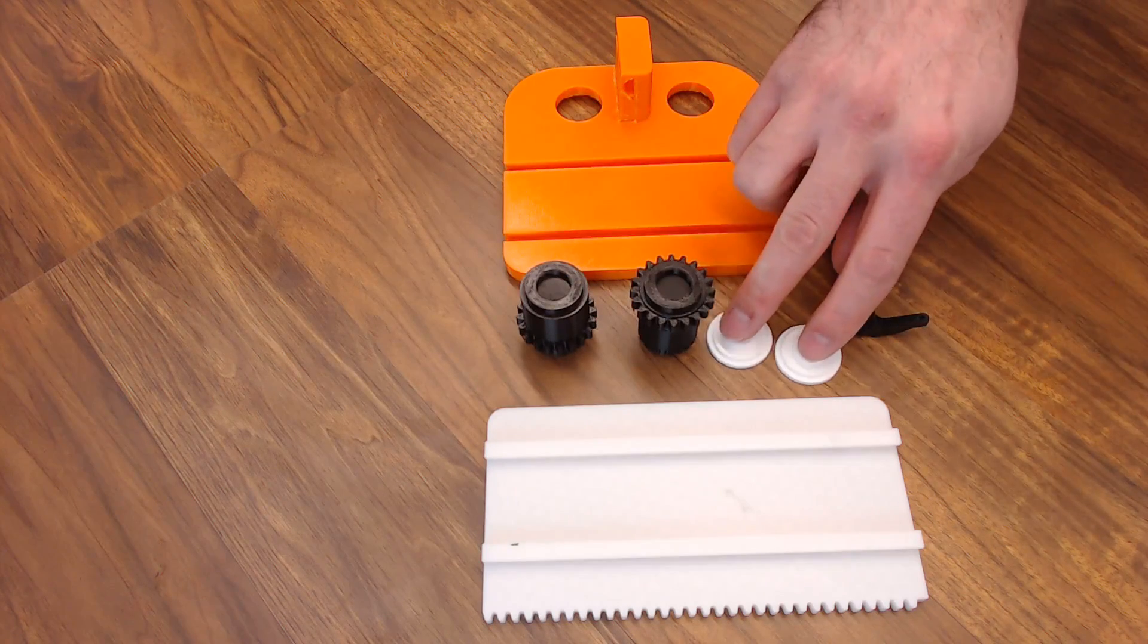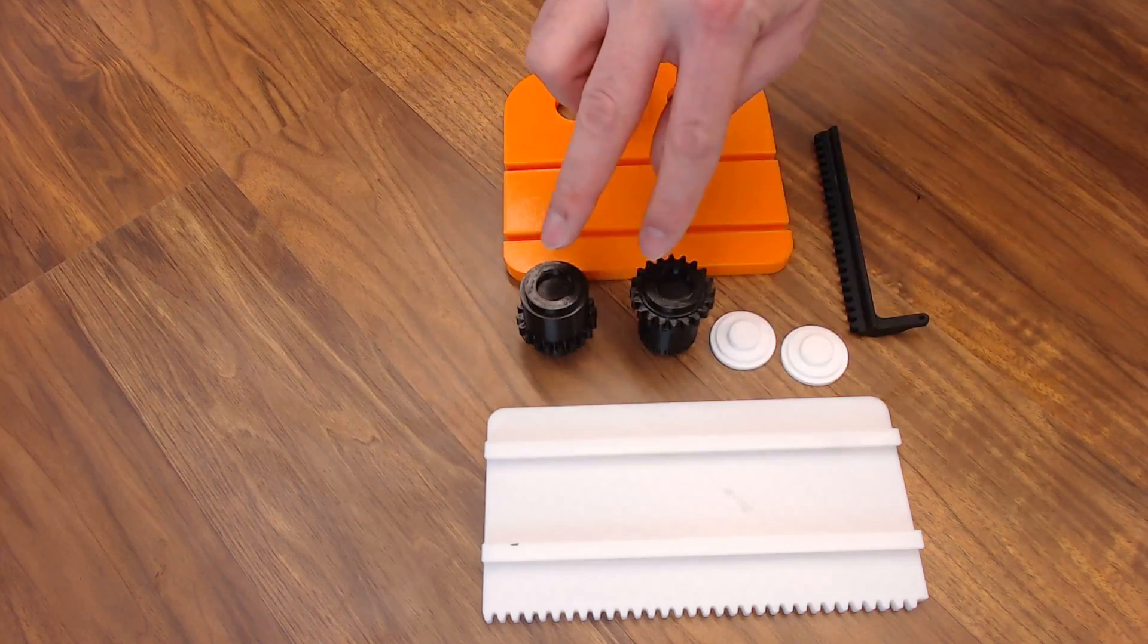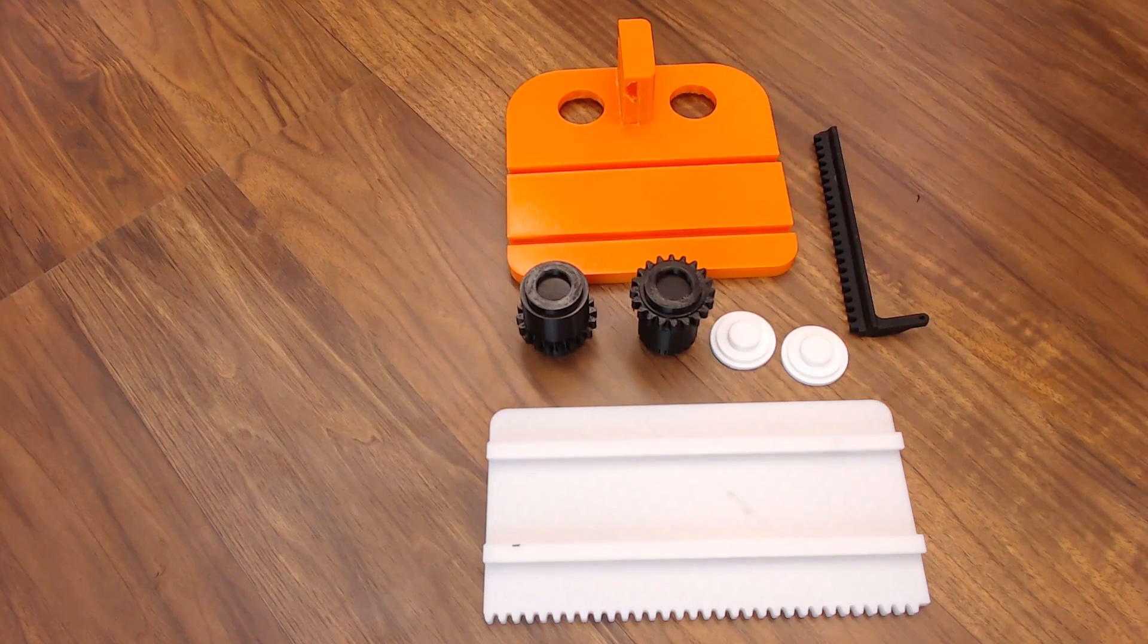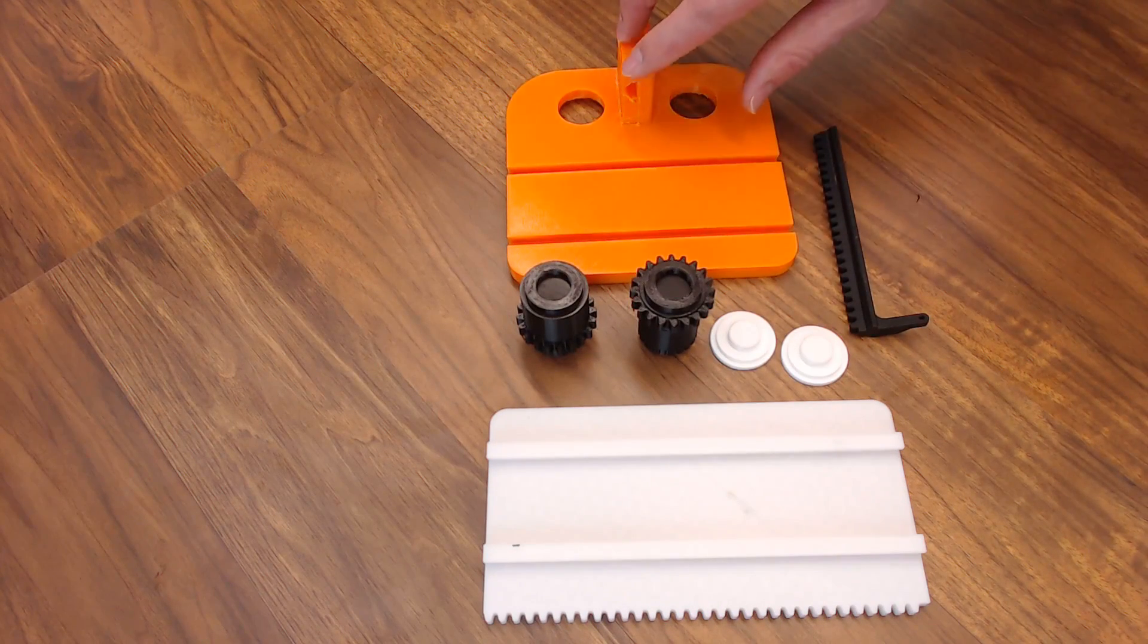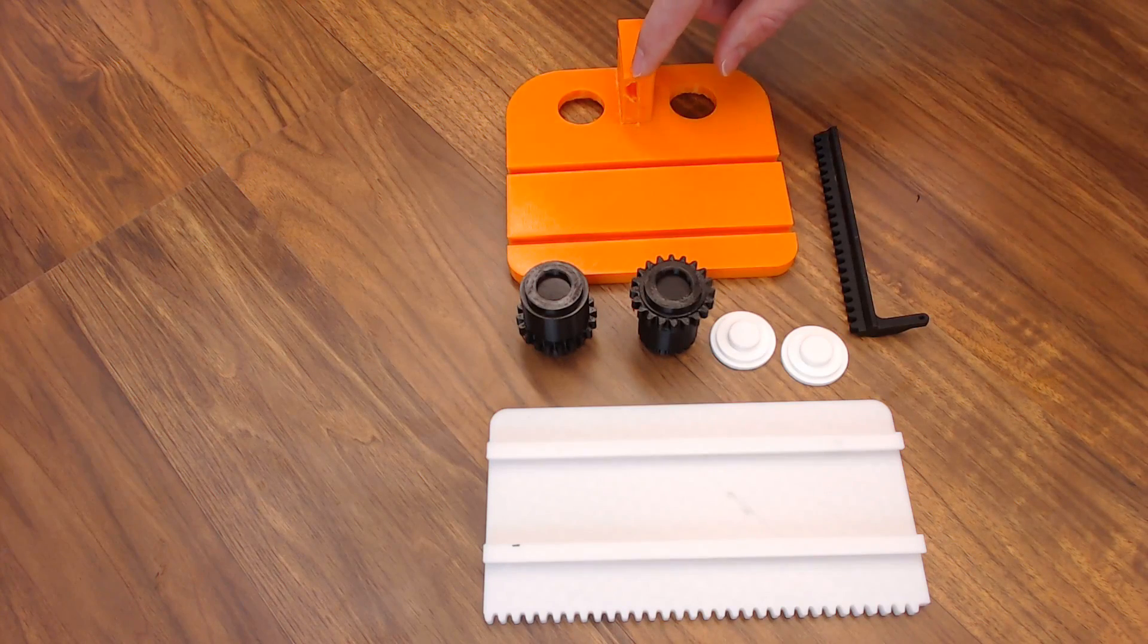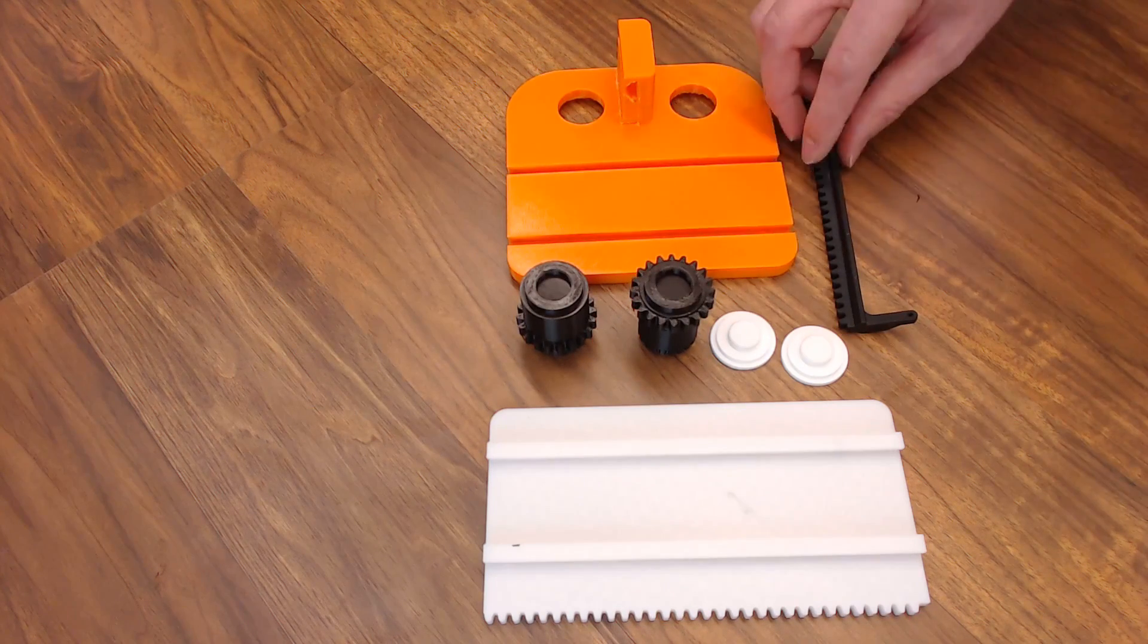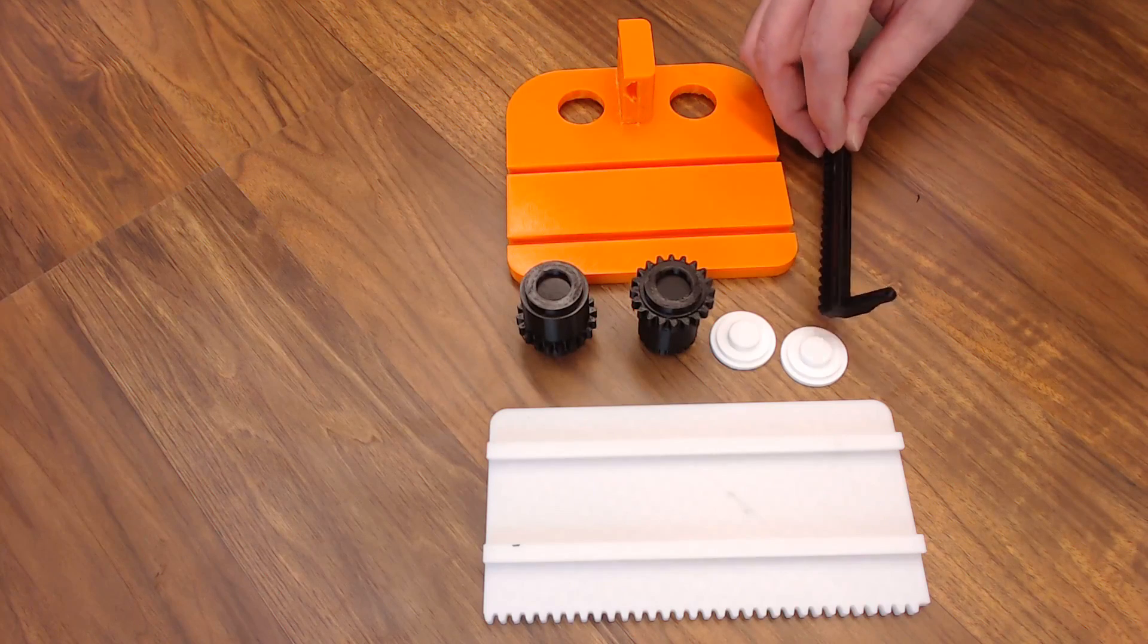You're going to need two knob retainers. These fit into the bottom of the knobs and hold them on the base plate. And then you need a base plate. I printed it just like this. You do have to have supports for this track. This track is what holds the Y rack in place. And then you need the Y rack. The Y rack is what holds the stylus.